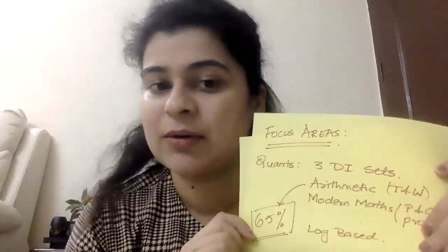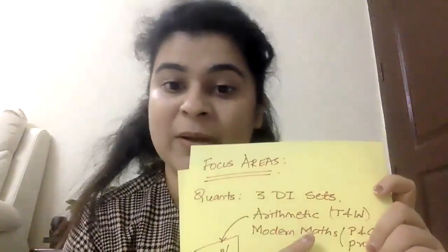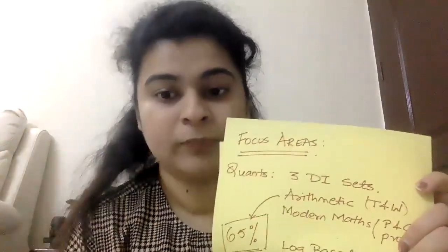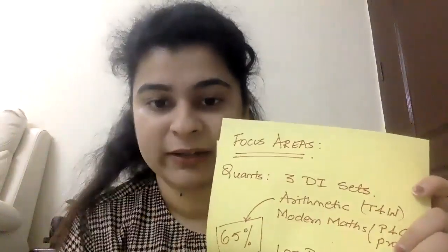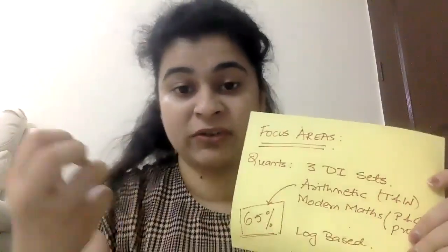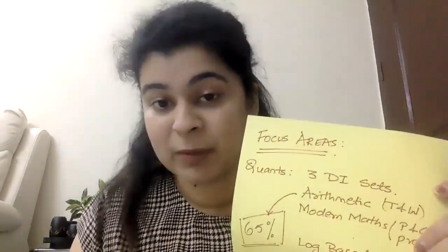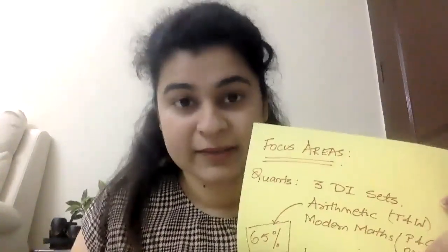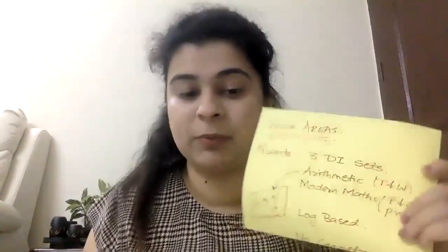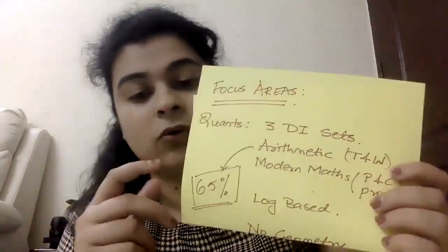Looking at the focus area of quants — minimum three DI sets, everybody has gotten three DI sets for sure. A fourth DI set means you scored well; your adaptive level has raised and it's giving you a fourth DI set, which is going to be calculation-intensive. All the people who have done four DI sets have ended up getting a score of 230–240 plus, so keep that as your benchmark.